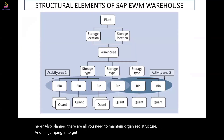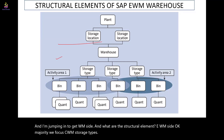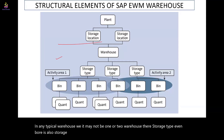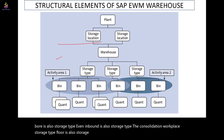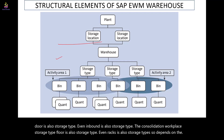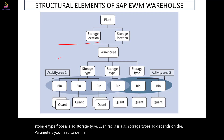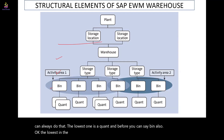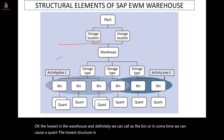On the EWM side, the main structural element to focus on is storage types. In any typical warehouse, there are many storage types: the door is a storage type, inbound is a storage type, the consolidation workplace is a storage type, the floor is a storage type, and racks are also storage types. Depending on the parameters, you define each area accordingly. The lowest structure in the warehouse is the bin, and within a bin we can also refer to a quant.